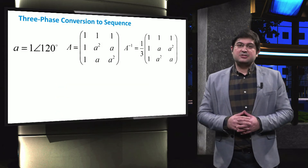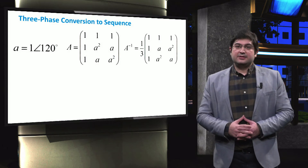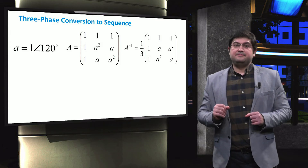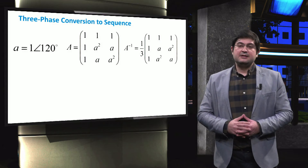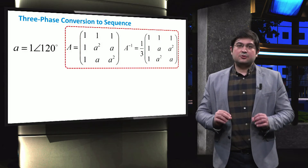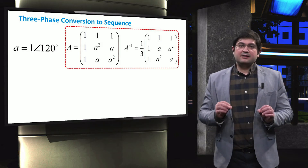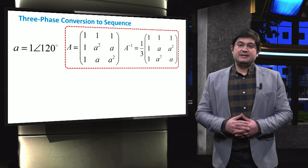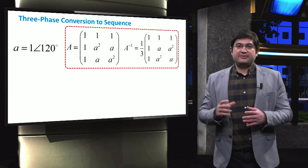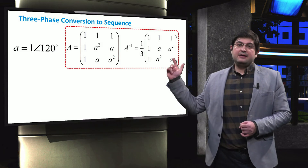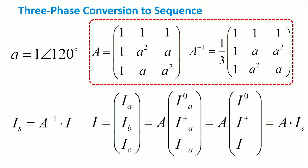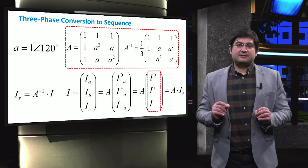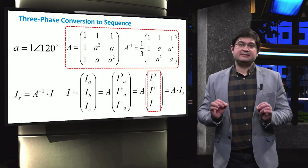In a three-phase system, each line has a phase difference of 120 degrees from the other ones. To transform from a three-phase system to three positive, negative, and zero sequences, matrix A is introduced and used as shown in the slide. If the phase difference is zero, then one is placed in the element of the matrix. If the phase difference between two lines is 120 degrees, then A is placed. And if the phase difference is 240 degrees, then A-squared is put in the matrix. If the values of the currents of lines A, B, and C are known, then the three sequences can be obtained by multiplying the A matrix. Note that the values of the negative and zero sequence determine to what extent the three-phase system is actually unbalanced.